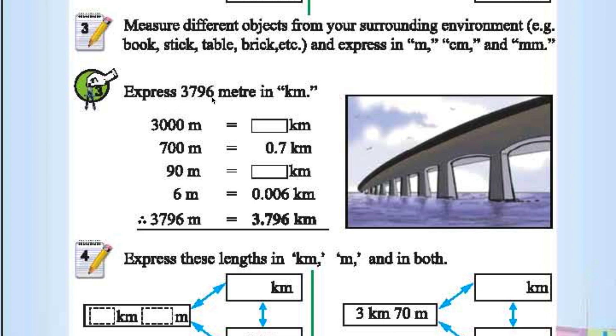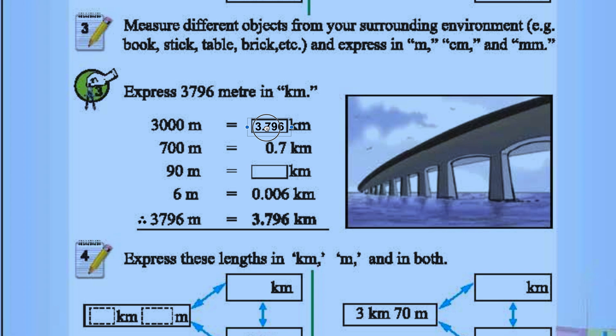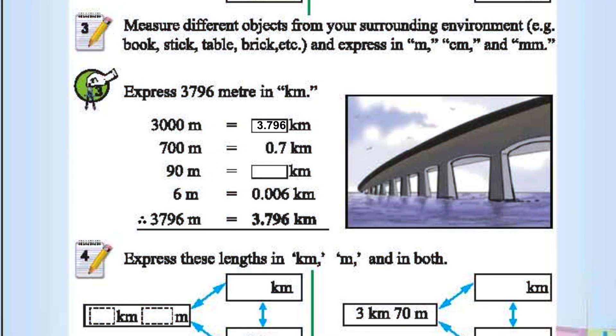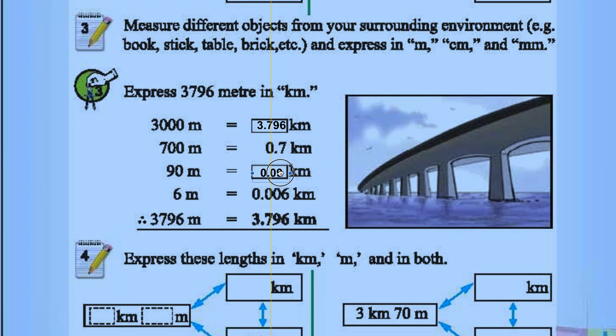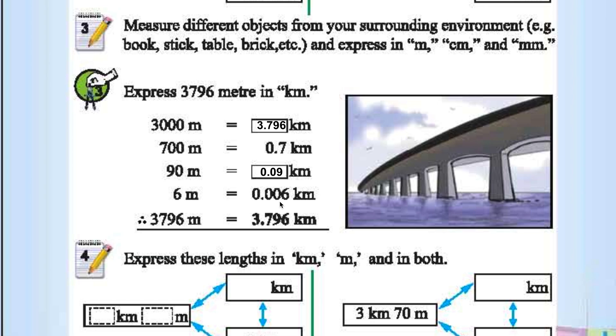Express 3796 meters in kilometers. 1000 meters is 1 kilometer, so it is 3.796 kilometers. 700 meters is 0.7 kilometers. 90 meters is 0.09 kilometers. 6 meters is 0.006 kilometers. 6 by 1000 is 0.006 kilometers.